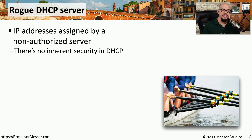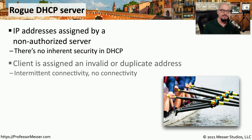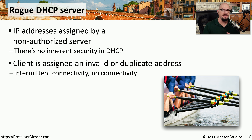One of the challenges when managing a network that assigns IP addresses using DHCP is there's no inherent security built into the DHCP protocol. That means someone could start their own DHCP server on this network and begin handing out IP addresses from an unauthorized device. Devices could be assigned an IP address not appropriate for their subnet, or given a duplicate IP address, which could cause error messages and disable their connectivity to the network.